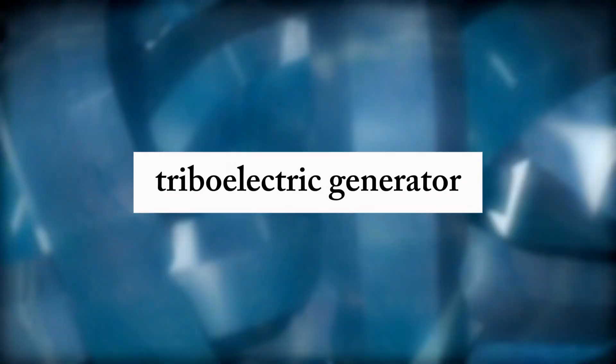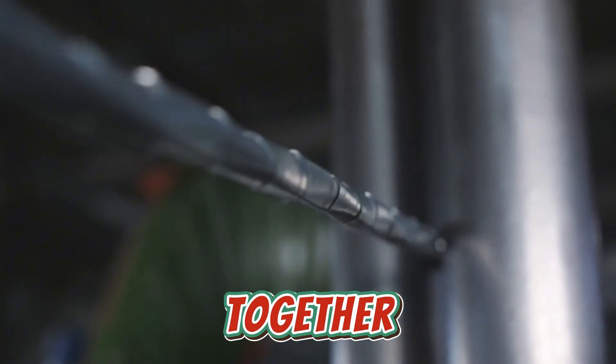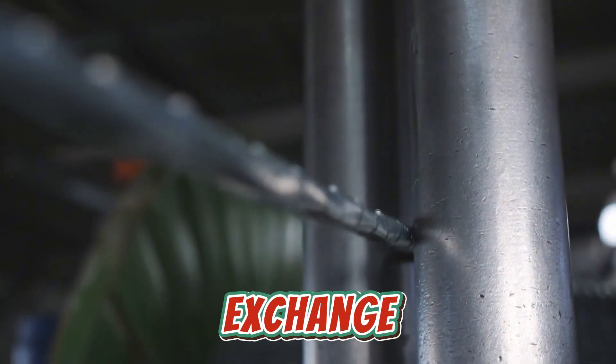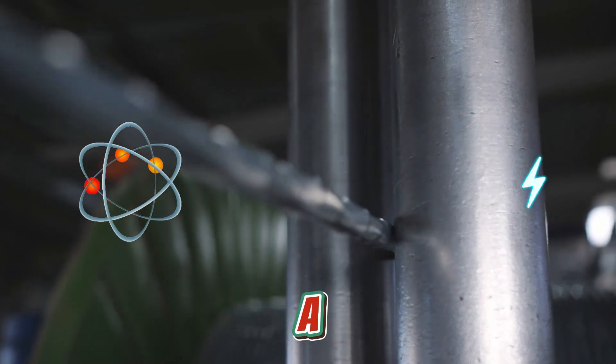Ready for one of the strangest ways to generate electricity? Meet the triboelectric generator, a device that creates power from friction. When certain materials rub together, like balloons, fabric or plastic, they exchange electrons and generate a charge.